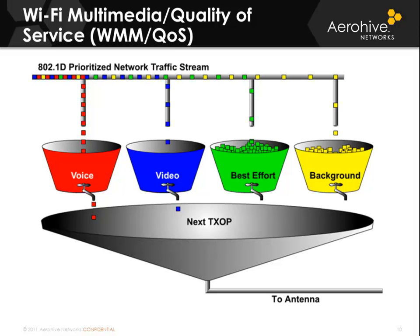When you look at what happens with voice, video, best effort, and background traffic, all of that information may be waiting to go out of a QoS-enabled device. However, it's not the highest priority traffic that goes to the back of the line — unless it is voice or video, it will have to wait its turn. When a device wins the contention for the medium, in other networking scenarios they can send one frame.